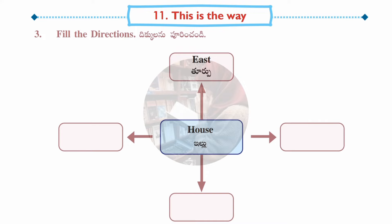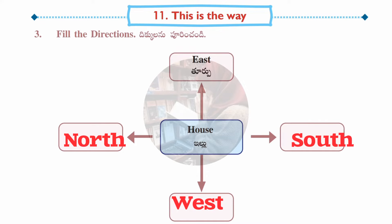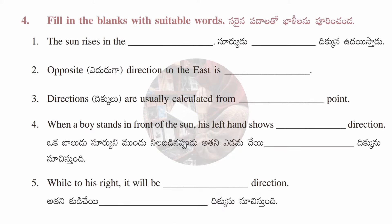Third section: fill in the directions. Imagine your house is in the middle — above is east, opposite to east is west, the right side is south, and the left side is north. The worksheet makes a twist by changing the directions, so place them correctly.